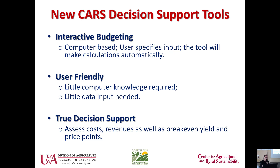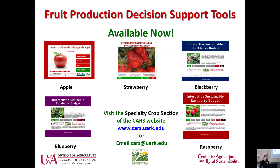We've also added a lot of decision support options. You'll see a little bit later on where we help you do different types of economic analyses so you can make better decisions for your farm. These tools are currently available on our website — the acronym for our group is CARS, C-A-R-S. Go to www.cars.uark.edu, navigate to the specialty crop section, and you can download any of these budgets — apple, strawberry, blackberry, raspberry, and blueberry.